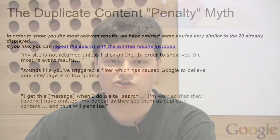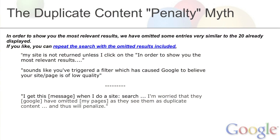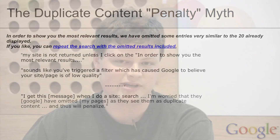I think the reason this happens is people will see this message. They're doing a query and they see: 'In order to show you the most relevant results, we've omitted some entries very similar to the ones already displayed. If you like, you can repeat the search with the omitted results included.' They click the repeat the search link and they see that their website has been omitted from Google search results. I've seen evidence that people get worried about this, thinking that this is actually a penalty that Google is applying on their site.